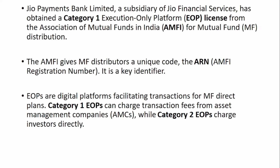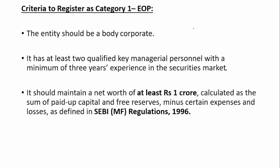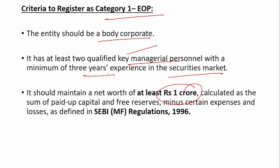Next, Jio Payment Bank Limited has secured a Category 1 Execution Only Platform (EOP) license from AMFI. AMFI gives mutual fund distributors a unique code called ARN — AMFI Registration Number. EOPs are digital platforms facilitating transactions for MF direct plans. There are two EOP categories: Category 1 charges the transaction fee from the Asset Management Company, while Category 2 charges the fee from investors directly. To register as Category 1 EOP, the entity should be a body corporate, have at least two qualified key managerial persons with a minimum three years' experience in the securities market, and a network of at least one crore.